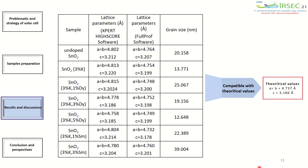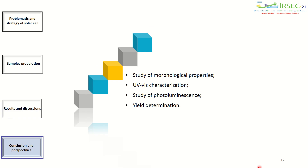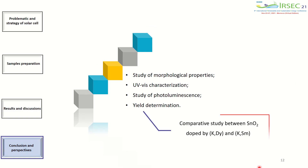The table in front of you shows the lattice parameter calculations using HighScore Plus software and FullProof software, which were compatible with theoretical values. To sum up, SnO₂ samples have been successfully synthesized by the co-precipitation method, which favors small and uniform nanoparticles through fast and homogeneous nucleation and crystallization. In order to better understand the study, the use of other characterization techniques such as UV-visible and photoluminescence is planned.